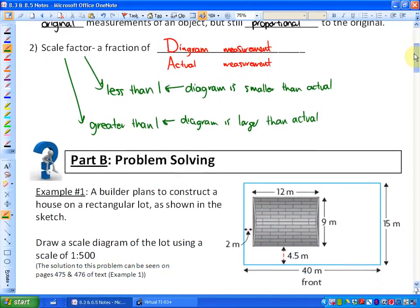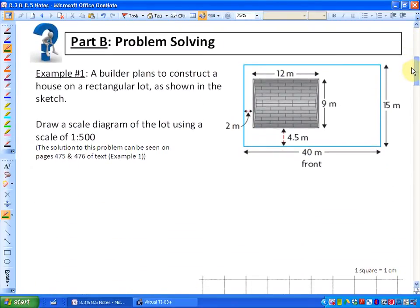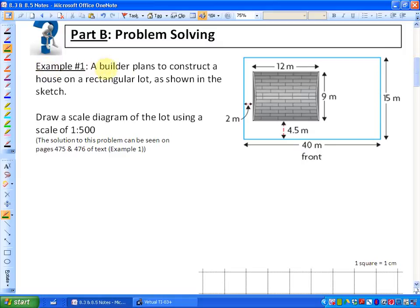So we're going to do one example at this particular moment using scale diagrams and scale drawings. Example number one, a builder plans to construct a house on a rectangular lot as shown in the sketch. So these are the actual measurements. The lot is 15 metres wide by 40 metres long. And the house is going to be 12 metres long by 9 metres wide. And you'll see the spaces here between the lot lines. What it says here is draw a scale diagram of the lot using a scale of 1 to 500.